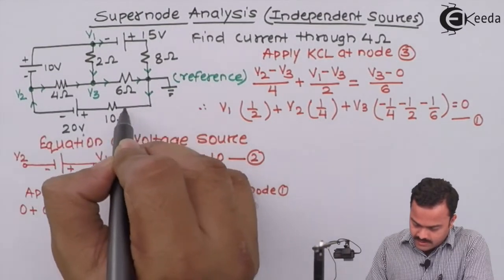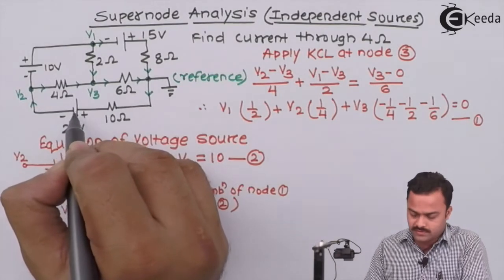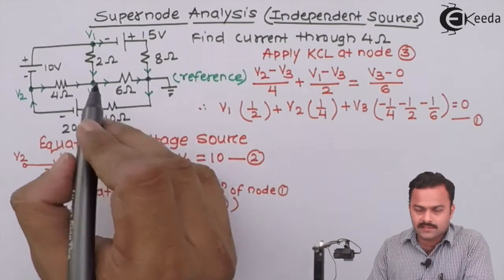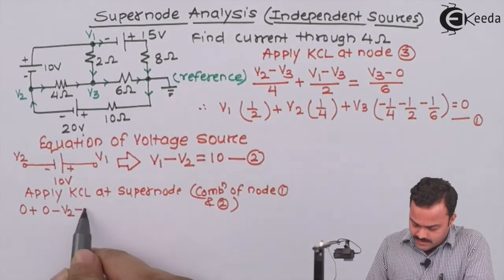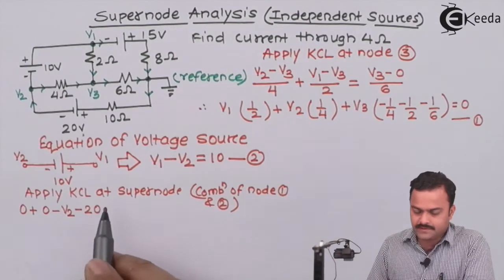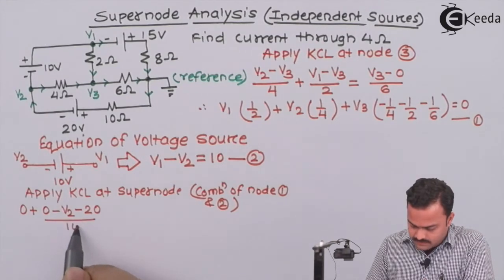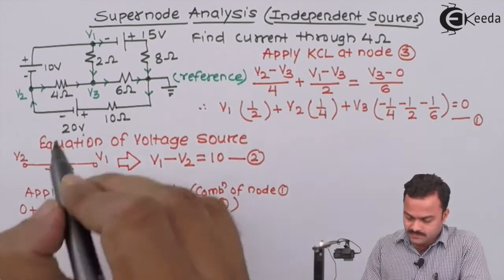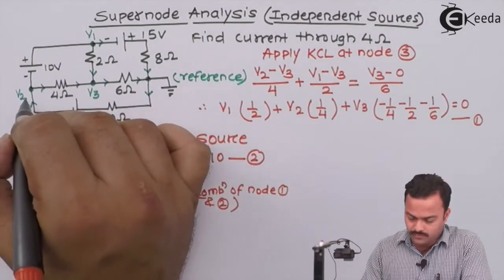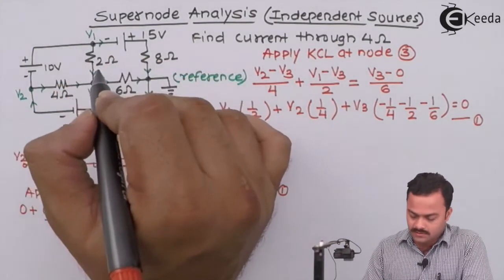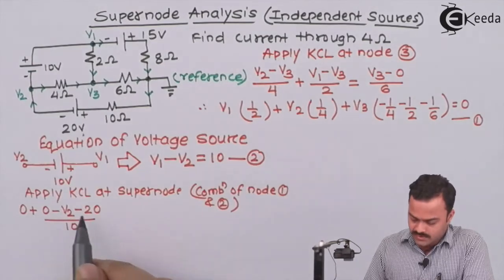So it started with the reference, ending on V2. In the current direction, there is a voltage source changing its polarity from plus to minus, that is a voltage drop, hence minus sign. The value is 20 upon the resistor of the branch is 10 ohm. So incoming current of node 2 I have noted down. For node 1, there was no incoming current, so 0.